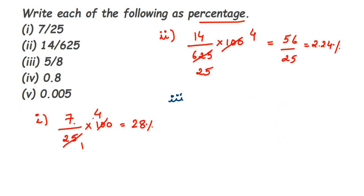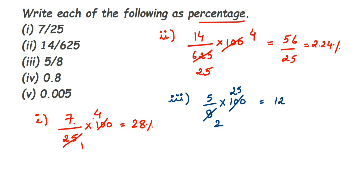The third question: 5 by 8 — find the percentage, so multiply with 100. I'm going to cancel in the 4-table because 100 doesn't go evenly in the 8-table. 4 twos are 8 and 4 twenty-fives are 100, so after cancellation I'm left with 25 and 2 in the denominator. 25 fives are 125, so I have 125 divided by 2.